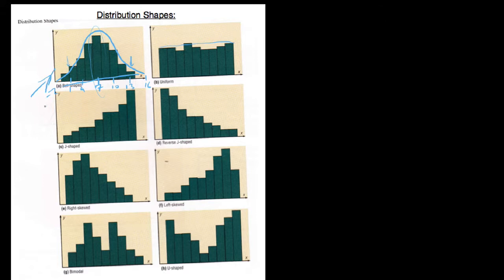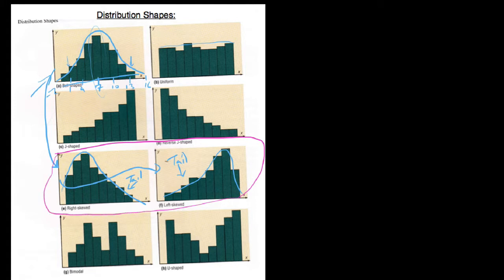Speaking of that hump in the middle, let's look at right-skewed and left-skewed distributions. These are really like your bell shape but favoring one side over the other. We still have a bell-type shape that goes up and down, but it becomes right-skewed when the tail is on the right — you look for the tail — and left-skewed when the tail is on the left.